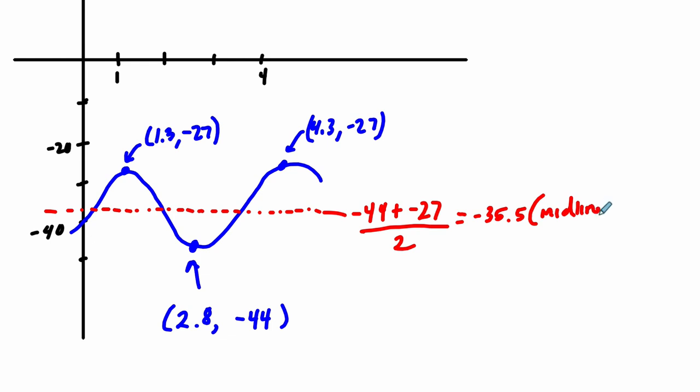And the amplitude is the distance between a maximum and the midline or a minimum and the midline. So you take the absolute value of the height of a max. In this case, you can use the y position of the min. Or you take the y position, negative 44, and subtract it by negative 35.5 and take the absolute value. No matter how you do it, the amplitude is the absolute value of negative 27 minus negative 35.5. And you always take the absolute value. The amplitude is a distance. And that's going to get us our amplitude of 8.5. And you can test it. Try switching the order around and try with negative 44 minus negative 35.5. Take the absolute value of that. You're going to get 8.5.